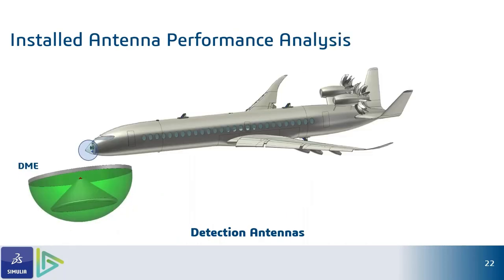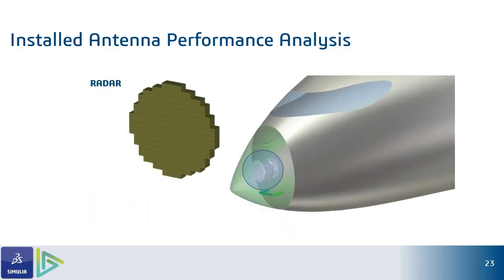There's also the DME — the Distance Measuring Element — which allows the ground station to understand the distance in terms of height between itself and the aircraft. You also have the radar, which is an important antenna. If your radar is faulty, your aircraft might be detected as an unidentified aerial vehicle, which could endanger not only aerospace security but also the aircraft's security.